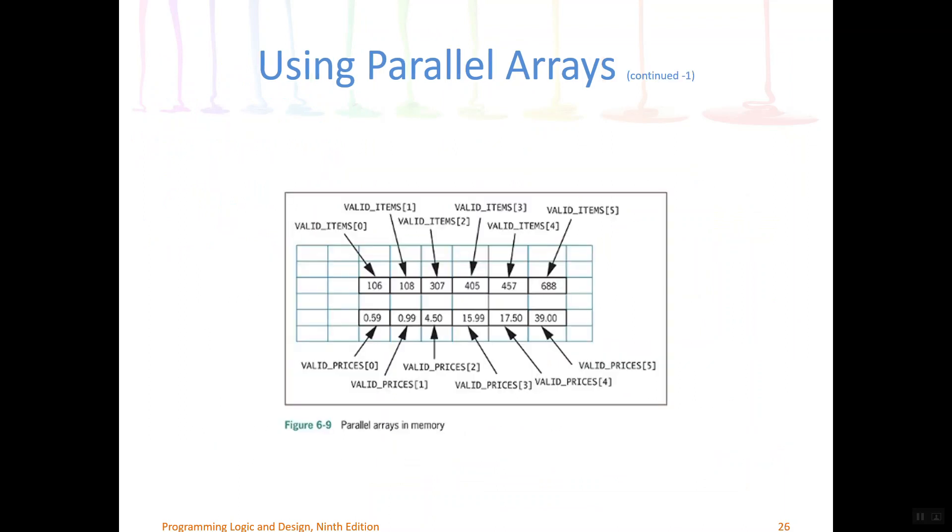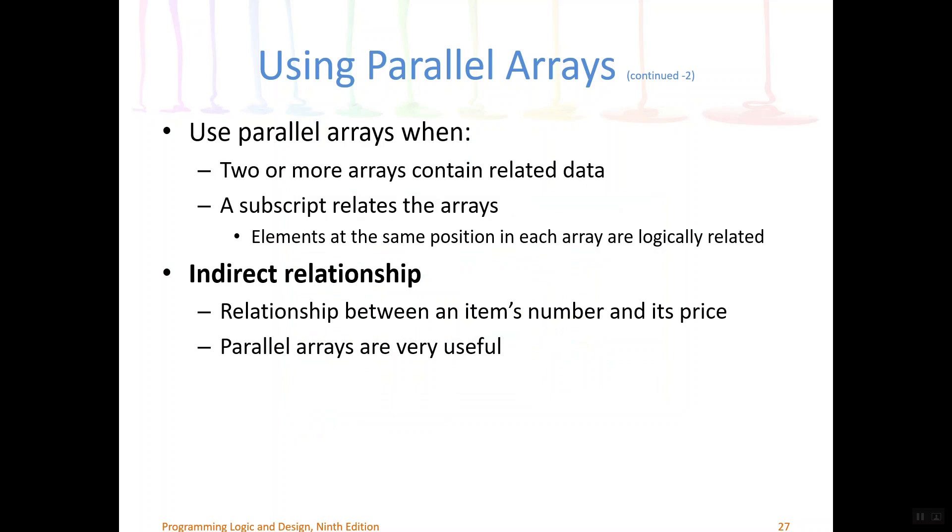So here's a picture of what I'm talking about. We were already working with this array validItems up here. These array access expressions are indicating how to access each element of the array. We're going to create a second array called validPrices. And it shows that, for example, item number 106 cost 59 cents, item number 108 cost 99 cents, and so forth. So what we'll do in our program is, if we do find a match, so say the user had typed in 106 as their item number, we would find that in our array and say, oh, we found a match. But we would go one step further and look at the corresponding price in the price array and say, your item cost 59 cents. So we would look at what position we're in in this array and look at the same position in the parallel array to find the price. So in this way, we're building a relationship between the item's number and its price. So parallel arrays can be very useful.